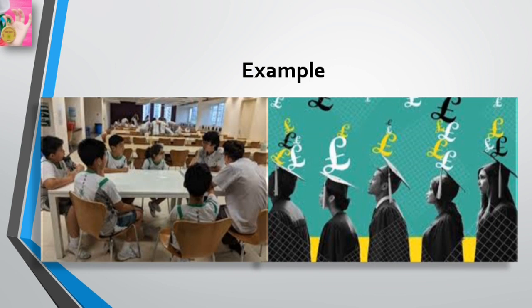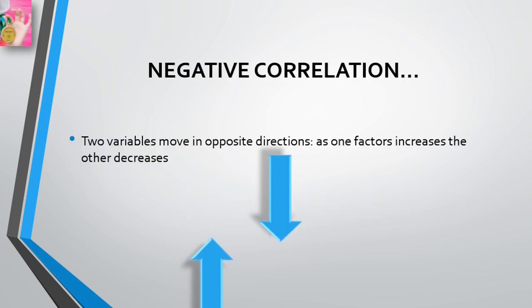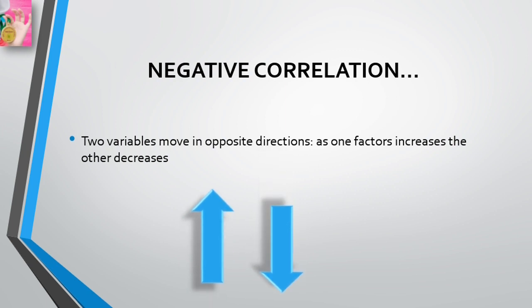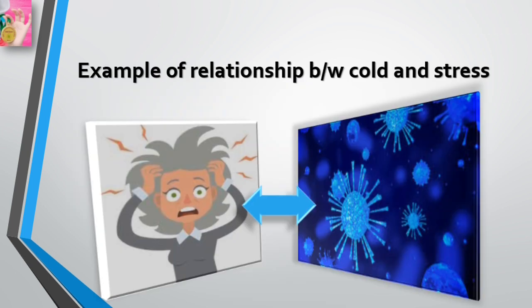In contrast, a negative correlation is a finding that two factors vary systematically in opposite directions — one increasing as the other decreases. A negative correlation exists between marital satisfaction and divorce rate — as the degree of reported marital satisfaction increases, the rate of divorce decreases. Thus, when two factors are negatively correlated, they vary in opposite directions.